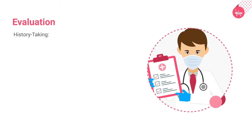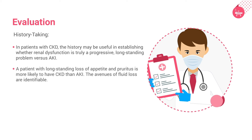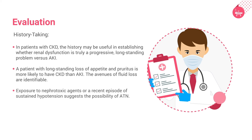As the symptoms of renal injury are nonspecific, the history provided by the patient is not always of diagnostic help. In patients with CKD, the history may be useful in establishing whether renal dysfunction is truly a progressive, long-standing problem versus AKI. A patient with long-standing loss of appetite and pruritus is more likely to have CKD than AKI. Exposure to nephrotoxic agents or a recent episode of sustained hypotension suggests the possibility of ATN. Symptoms of renal colic, abnormal voiding pattern, or a history of genitourinary malignancy point toward an obstructive cause.